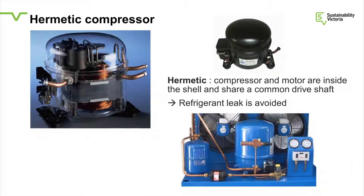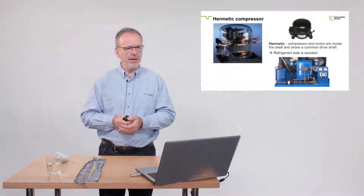The hermetic compressor is the one you'll see in the back of your fridge. As the name implies, it's a compressor that's completely sealed in a metal case. The picture on the left shows a hermetic compressor with a perspex case just to show you what's inside. Generally, you'll recognize it by that little black dome — if you turn your refrigerator around, you'll see that black dome, though it also comes in other colors. It is one of the common refrigerant compressors used for smaller applications.